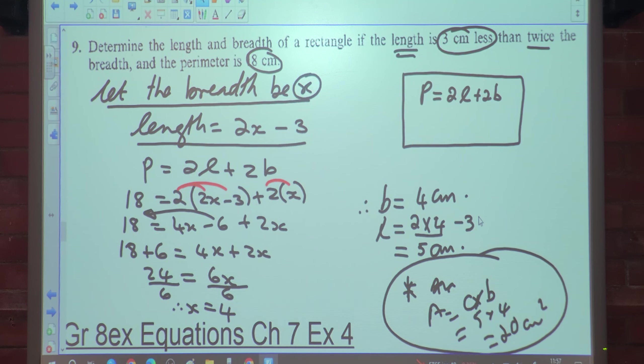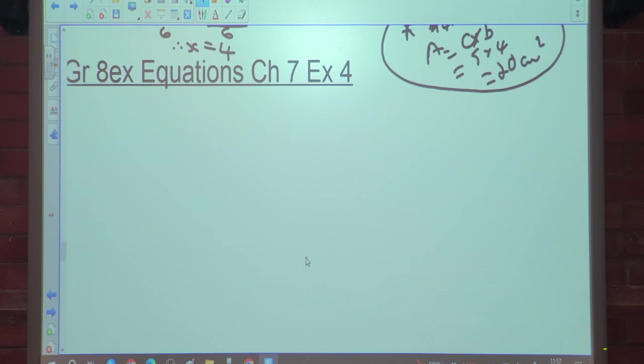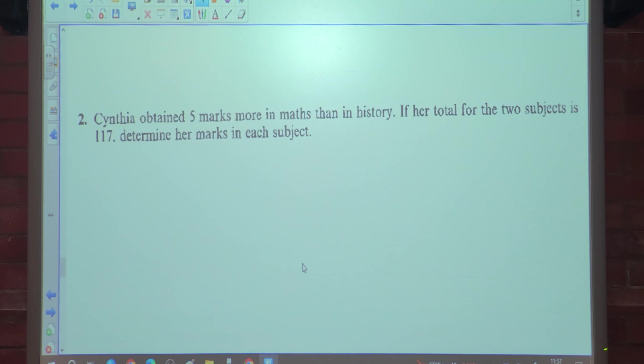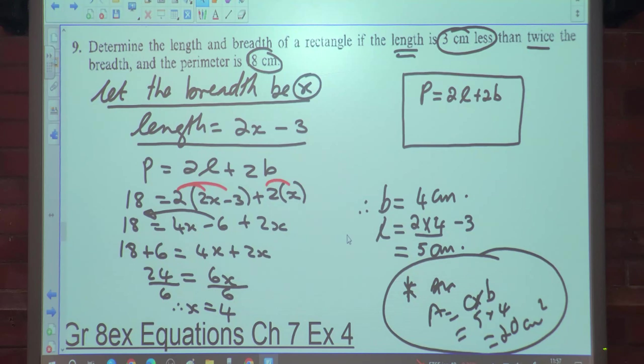So that brings us to the end of the odd numbers for Exercise 4. We're going to go into the even numbers, just going to change the marker quickly.